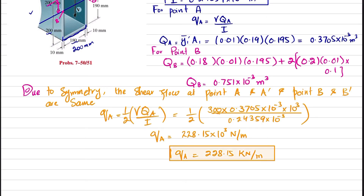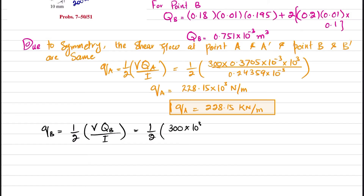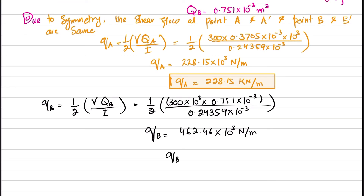For point B: q_B = (1/2) × V × Q_B / I = (1/2) × (300 × 10³) × (0.751 × 10⁻³) / (0.24359 × 10⁻³). When calculated, shear flow at B = 462.46 × 10³ N/m, or q_B = 462.46 kN/m.